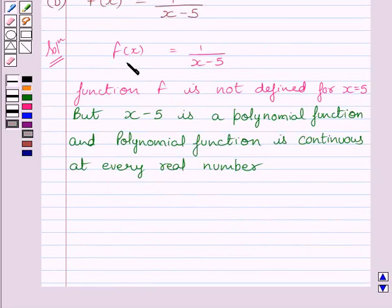Now we know f(x) is equal to 1 upon x minus 5. 1 is a constant function so it is continuous at every real number. x minus 5 is a polynomial function, it is continuous at every real number. So f(x) is equal to 1 upon x minus 5 is continuous at every real number except for x is equal to 5.